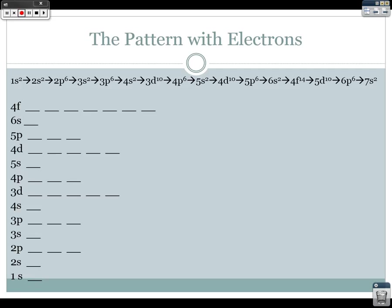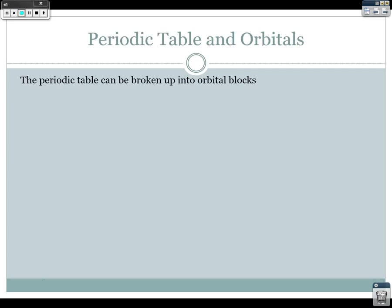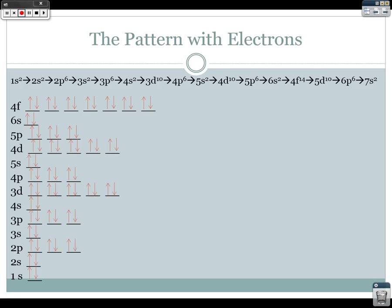We fill following those principles: one electron goes into the 1s, then we spin-pair it. Then we add to the 2s, spin-pair it, and move into the 2p — adding one spin-up to each of the three p slots before spin-pairing them, following Hund's rule. This diagram showing boxes with arrows for spin is called orbital notation. The bigger the element and the further down the periodic table, the more electrons there are to fill.